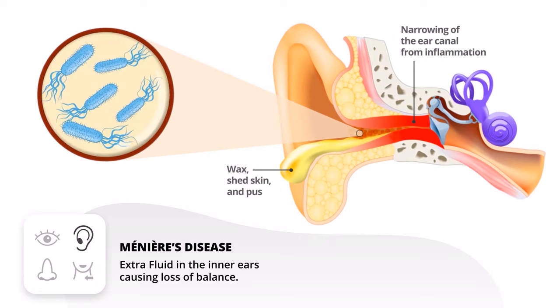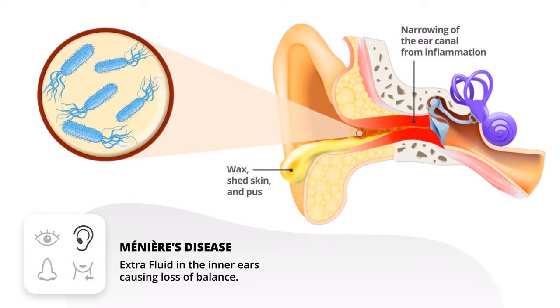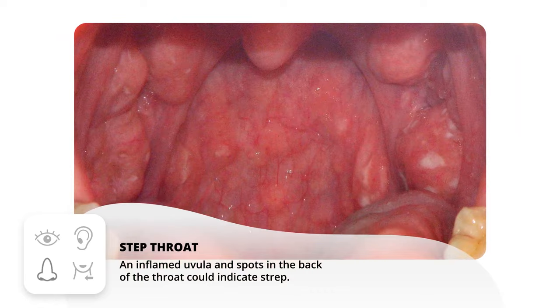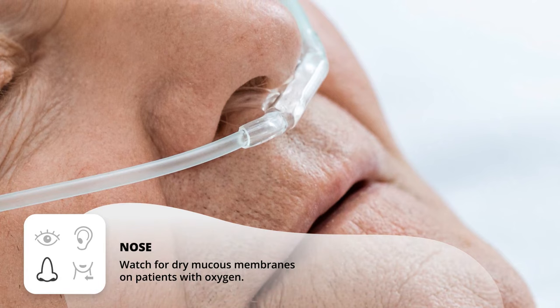Jumping to the throat, the top two things we usually see are strep throat, which are just like white splotches in the back of the throat, as well as an inflamed uvula. For the nose, you might see a little bit of crusties and you want to make sure to clean your patient up. You also get dry mucous membranes, especially if patients are on long-term oxygen therapy.